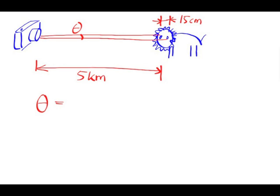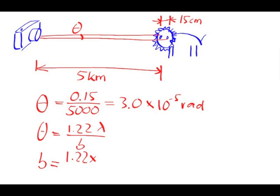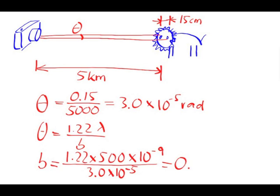First, we need to find the angle theta. Since the angle is tiny, we can approximate sine theta by just theta in radians, which is then equal to the distance between the eyes divided by the distance between the lion and the camera. So if we put the result for the angle into the formula, we obtain a diameter of 0.02 meters, that is 2 centimeters, for the aperture of the camera.